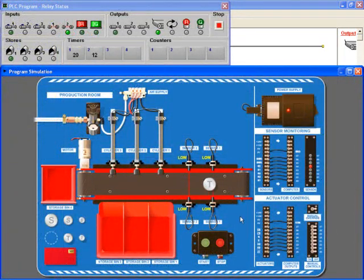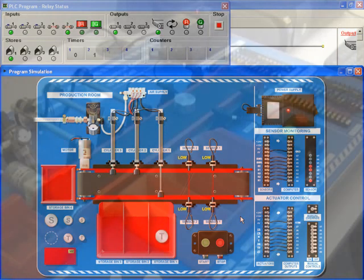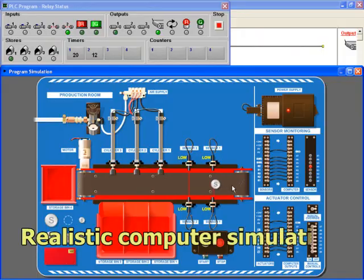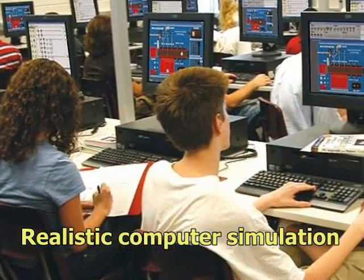All programming tasks that students complete can be tested on both the simulated production line and the real hardware system. By using the on-screen simulation of the production line, you can turn every PC into a fully functioning training system.